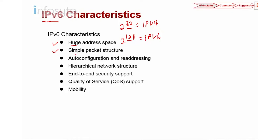Second, IPv6 has a simple packet structure. When we look into the packet trace later on, you'll be able to see that in IPv4 the header is more complex compared to IPv6. So IPv6 is actually simpler, while IPv4 is more complex. IPv6 is simpler but not necessarily shorter — IPv4 has 32 bits versus IPv6's 128 bits, so the IPv6 packet structure allows it to expand.